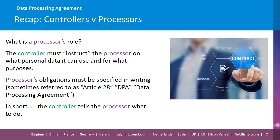So what is a processor's role? The controller must instruct the processor on what personal data it can use and for what purposes. A processor's obligations must be specified in writing, sometimes referred to as Article 28 terms, a DPA or data processing agreement.